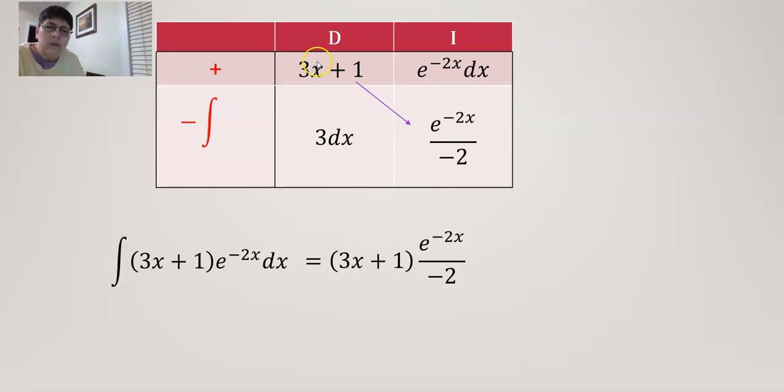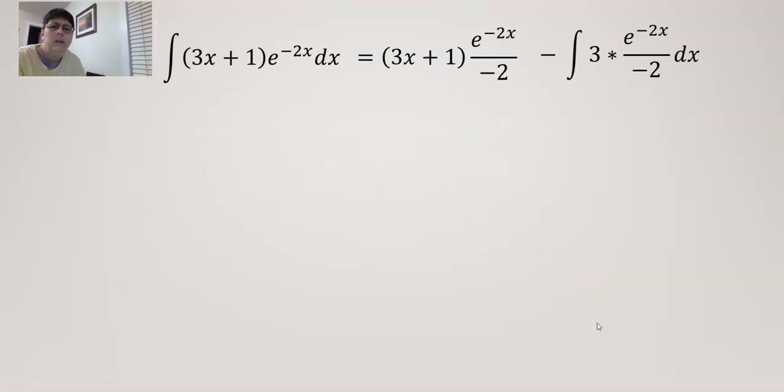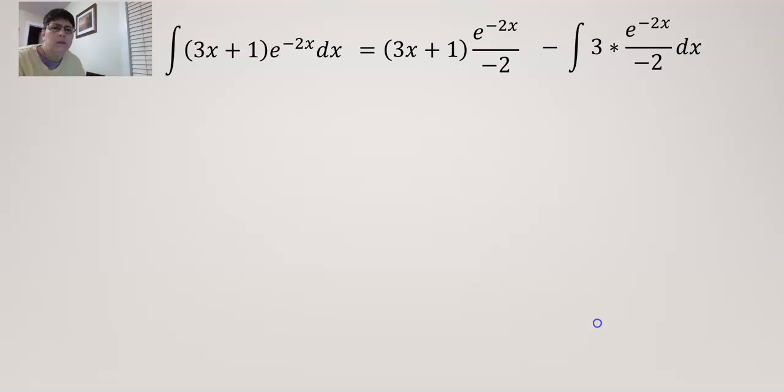So let's go ahead and use the table method to write down what the integral is if we integrate it by parts. So we just multiply on a diagonal basis, it's going to be positive. Then we subtract, and I split up the 3 and the dx, so 3 dx is just multiplied together. Let's simplify. I don't like negatives in the denominator.